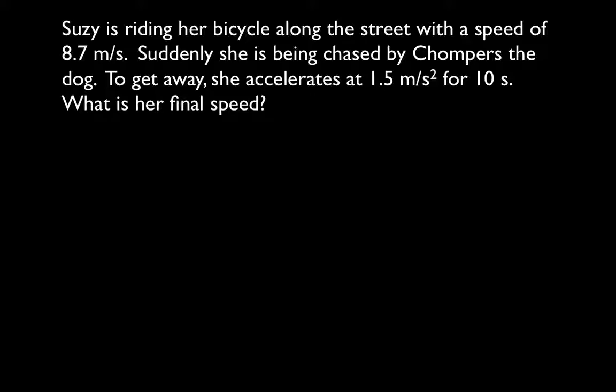The first problem: Susie is riding her bicycle on the street with a speed of 8.7 meters per second. Suddenly, she is being chased by Chompers the dog. She needs to get away, so she accelerates at a rate of 1.5 meters per second squared for 10 seconds. We want to know: what is her final velocity?